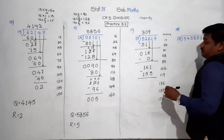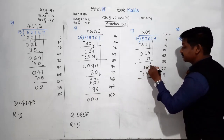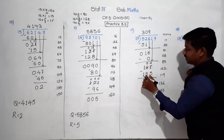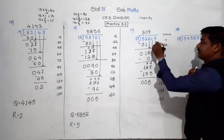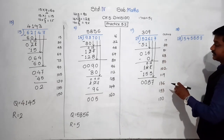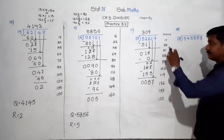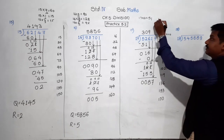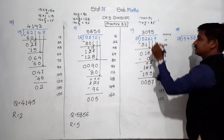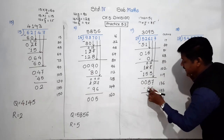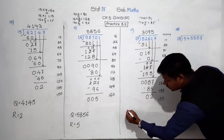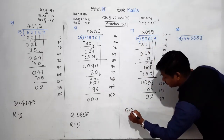Subtract 153 from 161: 1 minus 3 not possible, take borrow — 6 becomes 5, and 1 becomes 11. 11 minus 3 is 8, 5 minus 5 is 0, 1 minus 1 is 0. Remainder is 8. Bring the next digit 7 down — the number becomes 87. 87 is not in the table of 17. The smaller number than 87 is 85. 17 fives are 85. Subtract 85 from 87: 7 minus 5 is 2, 8 minus 8 is 0. All digits finished. Quotient is 3,095 and remainder is 2.